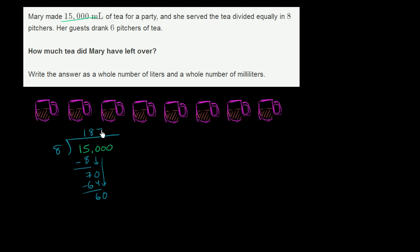Eight goes into 60 seven times. Seven times eight is 56. Subtract again. We get a four. Then bring down a zero again. Eight goes into 40 exactly five times. Five times eight is 40. And we're not left with a remainder.